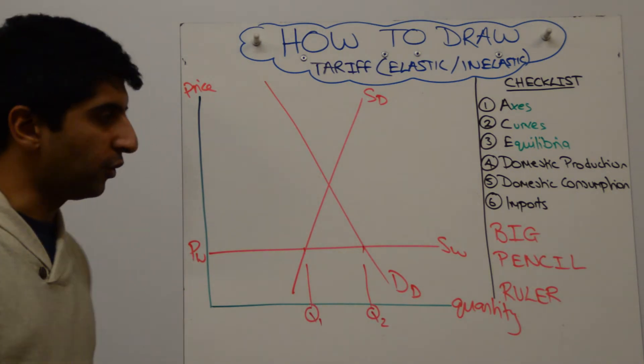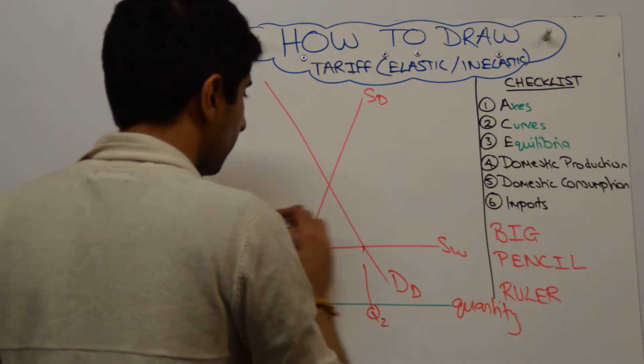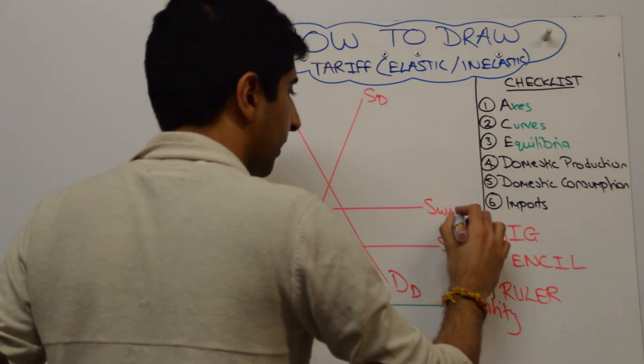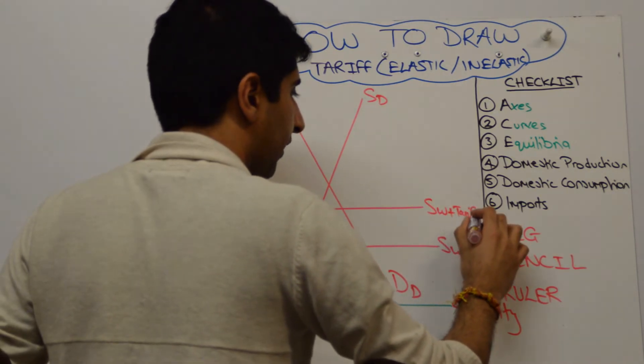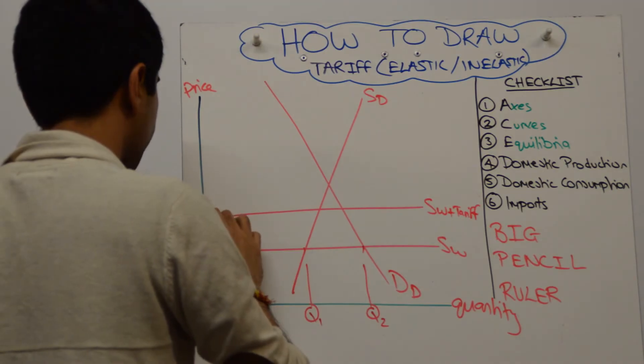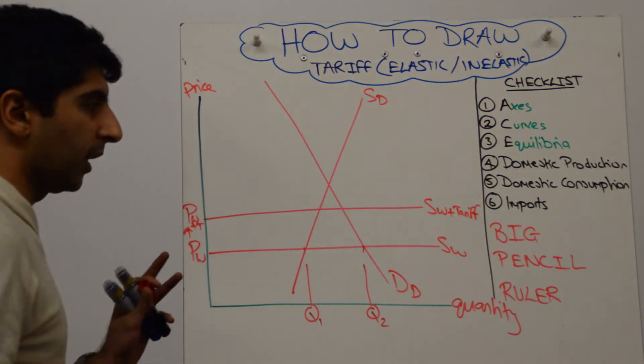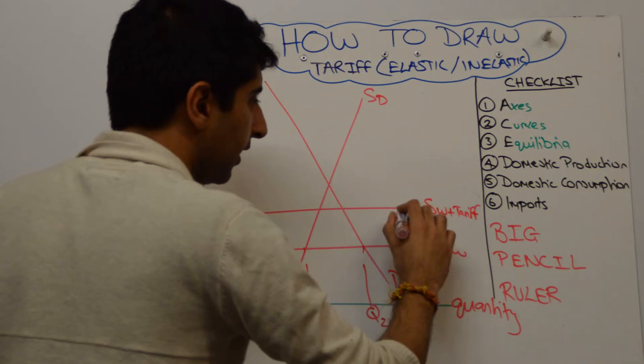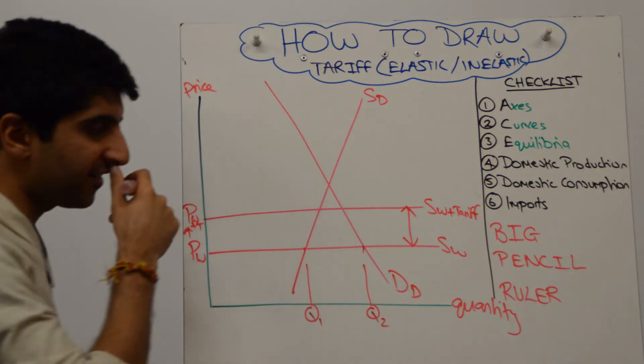Now you want to show the tariff, so you shift the supply of the world upwards to now, let's say, SW plus tariff. And that leads to a higher price of Pw plus T. Make that clear with the upward arrow. The arrow here represents the value of the tariff, as we're used to.